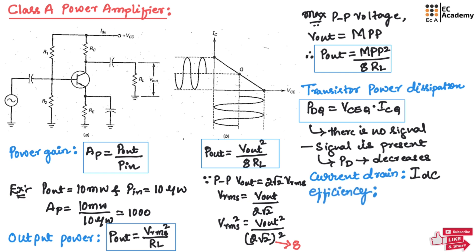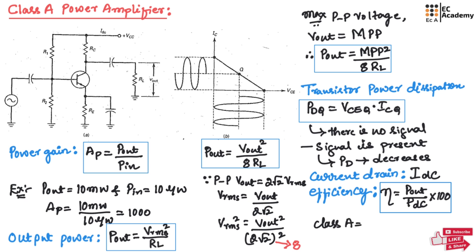Next is efficiency. The efficiency of an amplifier is given as output power divided by input power. In the case of a power amplifier, the input power is DC power, denoted as P_DC, multiplied by 100 to get efficiency as a percentage. For a class A power amplifier, the efficiency is 25%, which is very low.